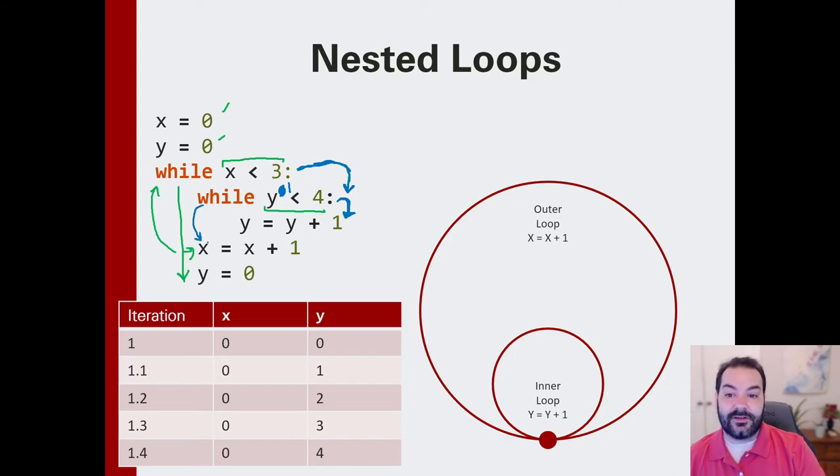x gets incremented to one. So x is no longer zero. It's become one. We're not done. We don't just reset. Then we move on again because we're following things, in this case, sequentially. y gets reset. So in our design, x is going to run three times. y runs four times each time. So in this case, you can see it'll go back.